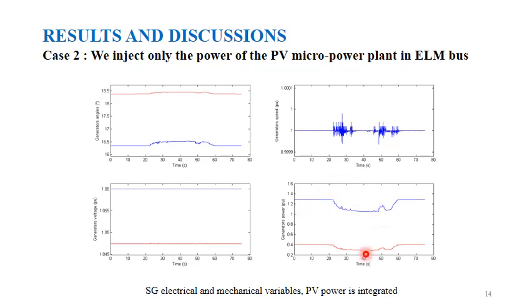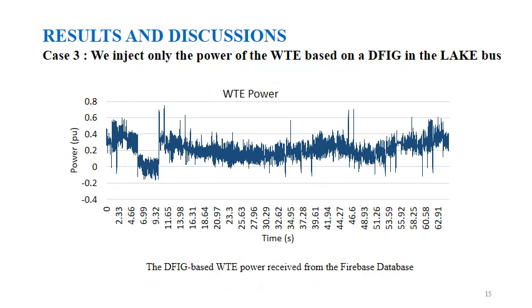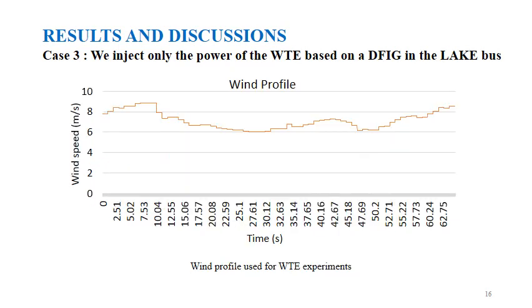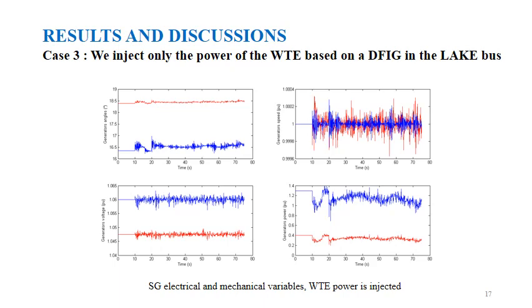The generated power from both generators adapts itself to follow the injected power. The third case is when we inject only the power of the wind turbine emulator based on a doubly-fed induction generator at the lake bus. This figure shows the variation of the injected power, which is more fluctuant compared to the injected PV power. This power is obtained under specific wind profile conditions: the wind speed must be more than 5 m/s and less than 9 m/s. In this case, the mechanical and electrical quantities are more affected by the high fluctuation of the wind turbine emulator power compared to the smoother PV power of case 2.